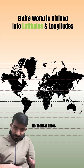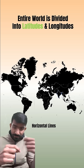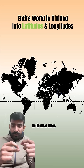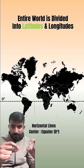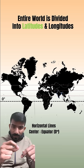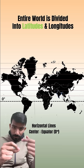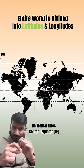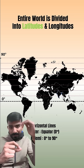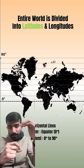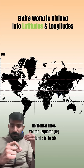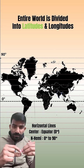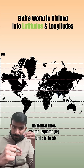The lines that are horizontal in nature are called latitudes. The latitude which is at the center of the earth, which cuts the earth into two parts, is called the equator, and that is residing at zero degrees. Now, all the countries lying above the equator are part of the northern hemisphere and their latitudes vary from zero degrees to 90 degrees.